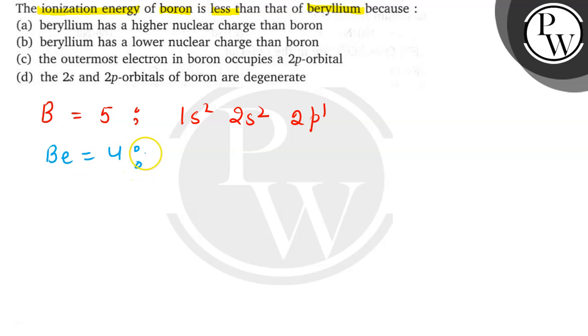atomic number 4, it is 1s² and 2s². So we can clearly see here in beryllium